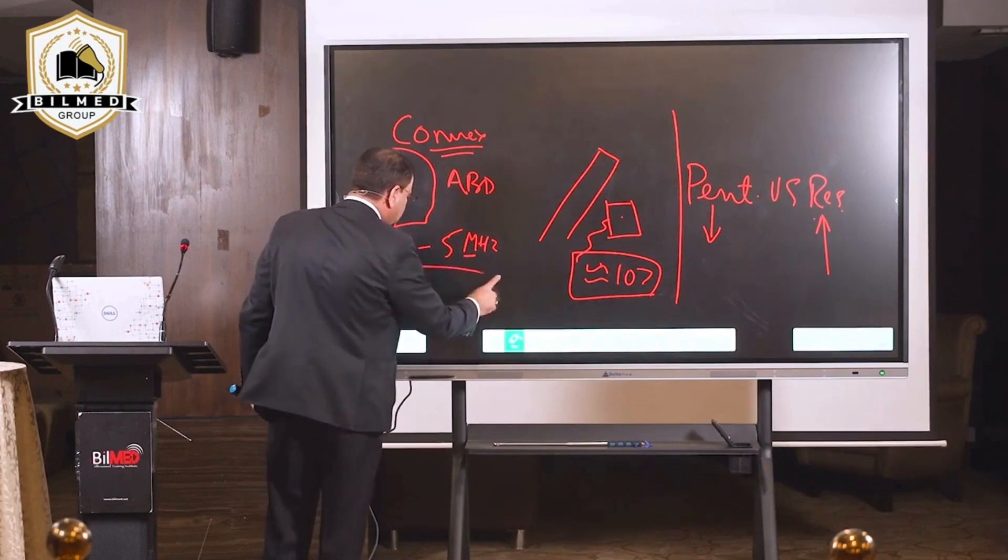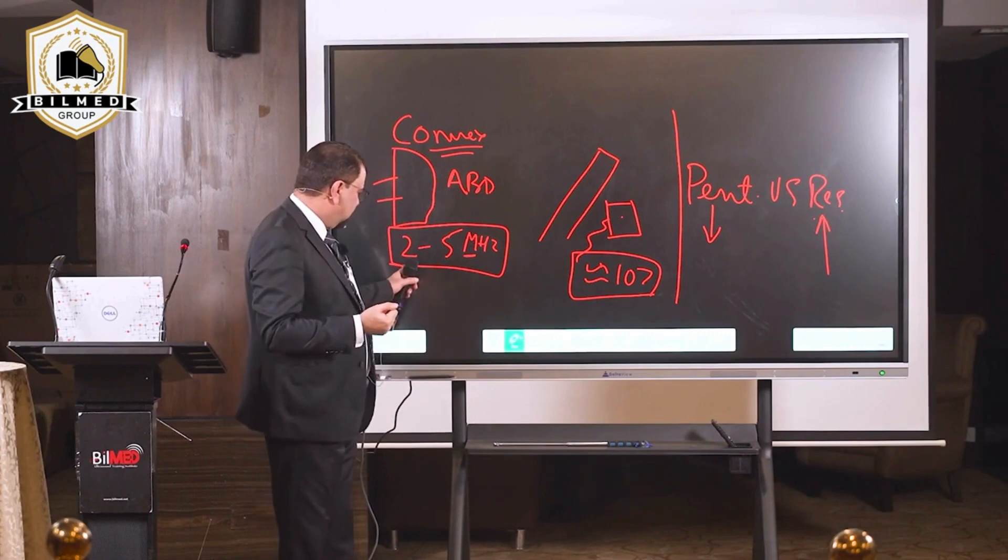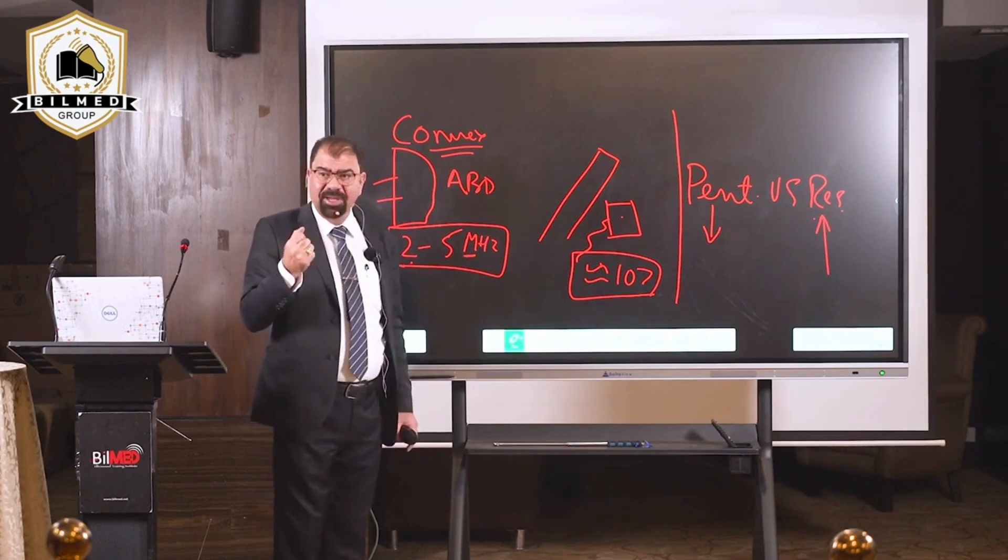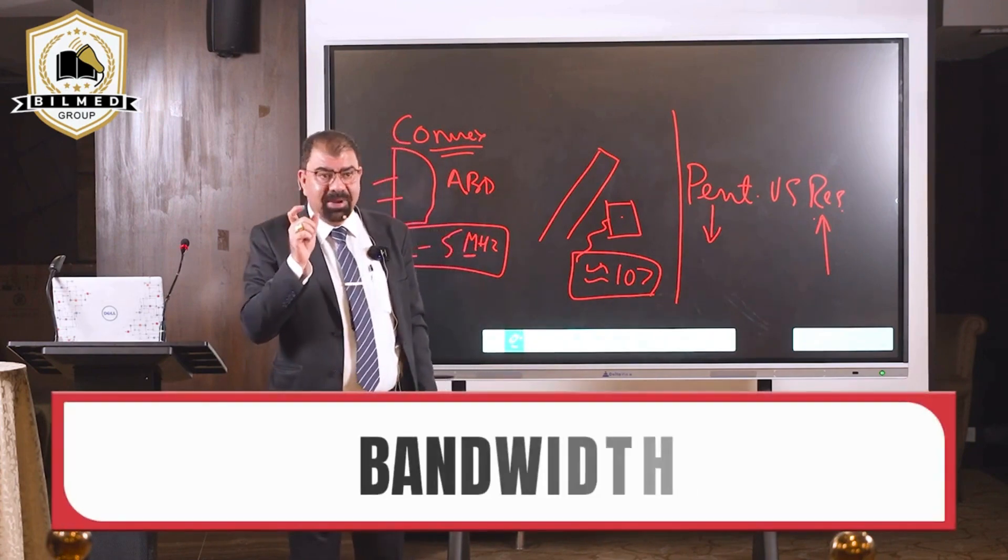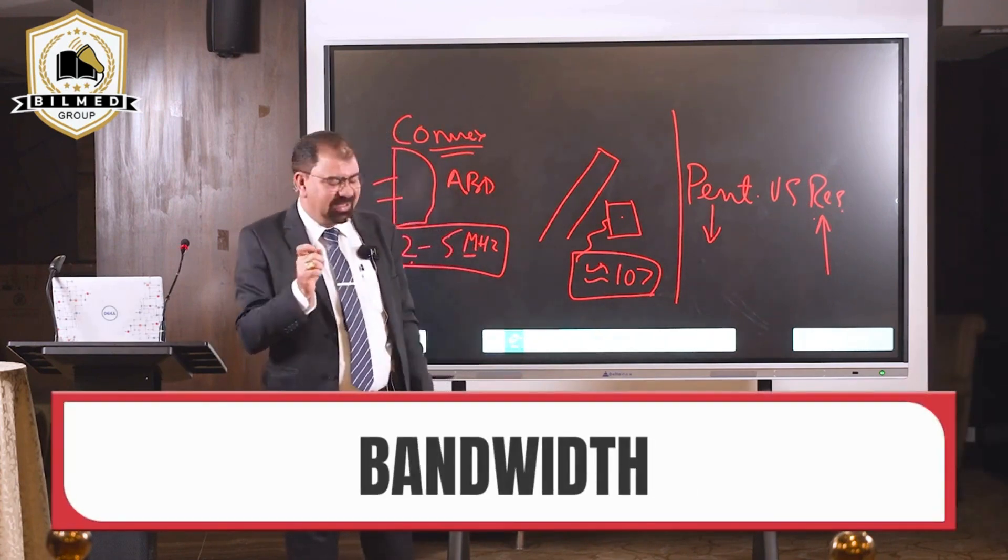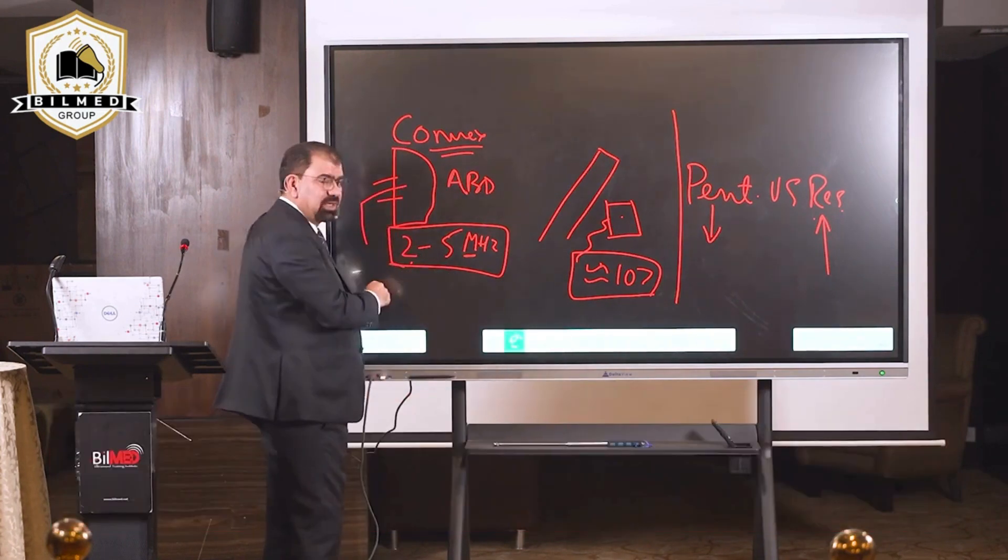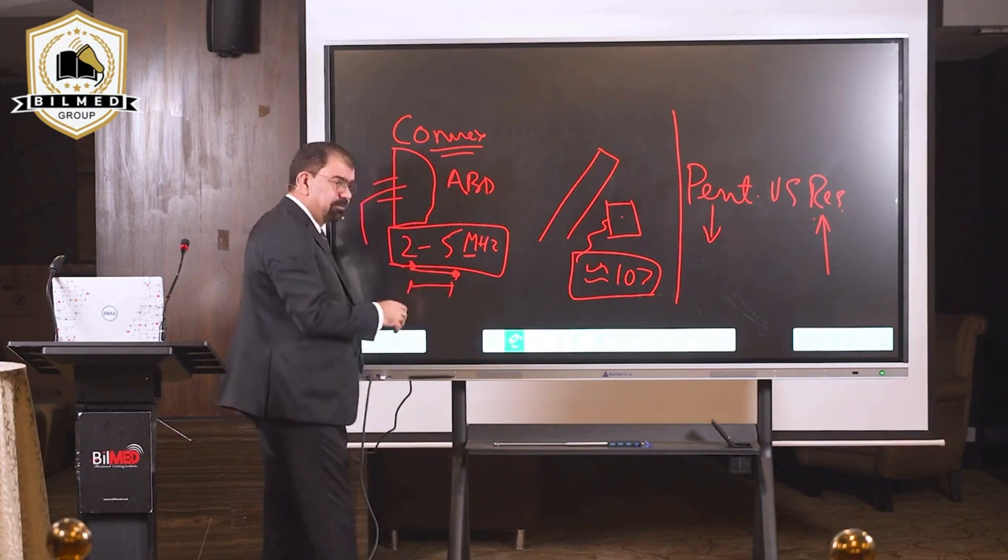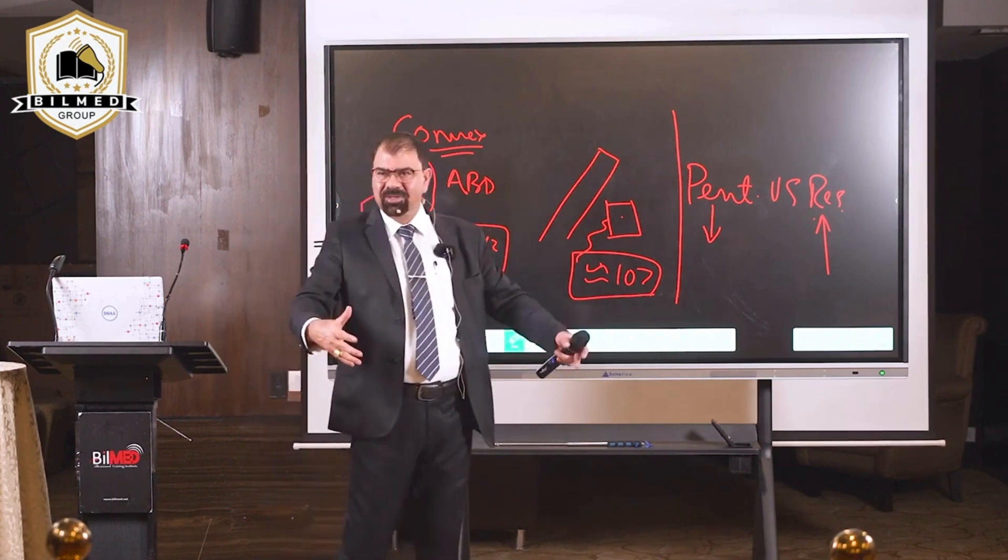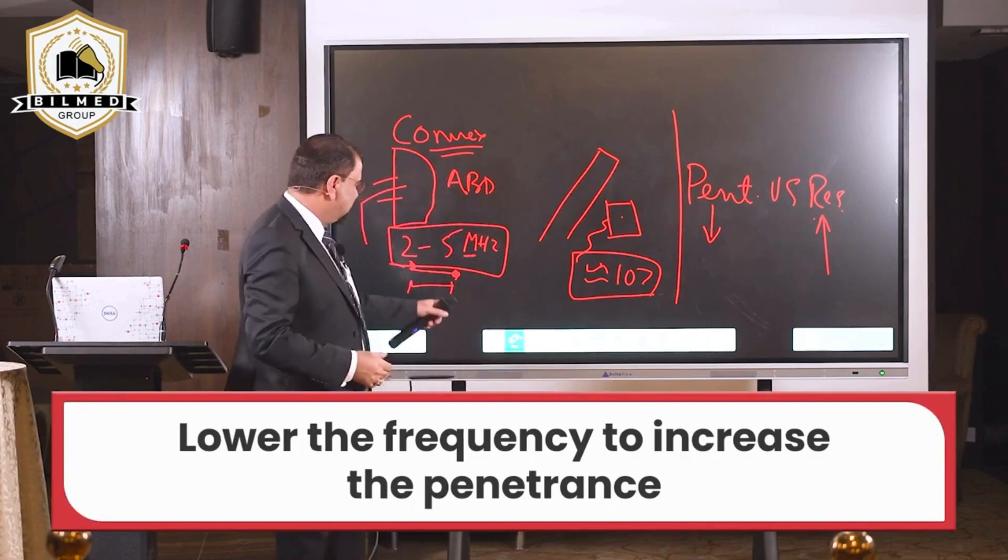What is this 2 to 5 MHz? This is the bandwidth. This probe's frequency can be changed between 2 and 5 MHz. If the patient is obese, you need more penetration, which means you have to decrease the frequency.